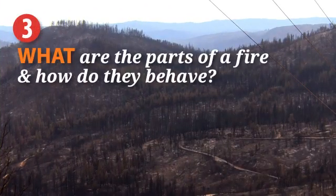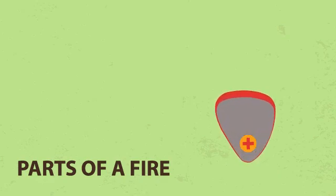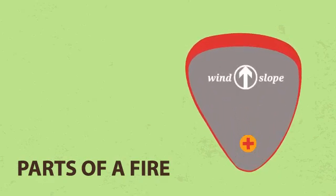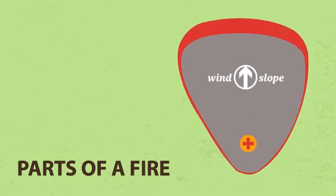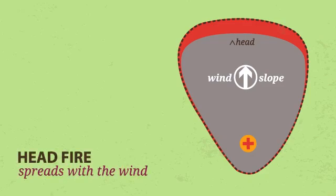What are the parts of a fire and how do they behave? Most wildfires start at a single point called the origin and spread most rapidly in the direction of the wind or uphill, generally forming the shape of an ellipse. The fire perimeter is the edge or boundary around the fire. The fastest spreading part of the fire is called the front or head, and a fire spreading with the wind is called a head fire.